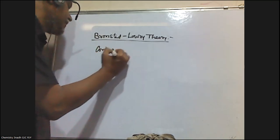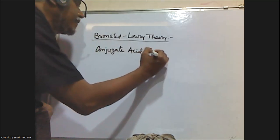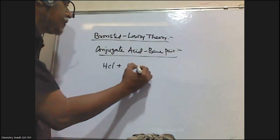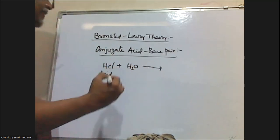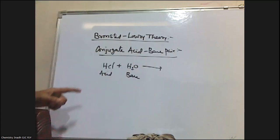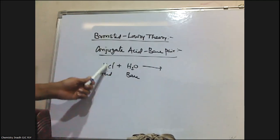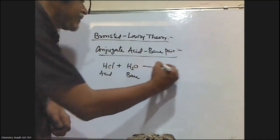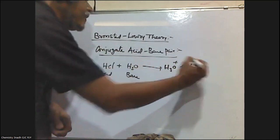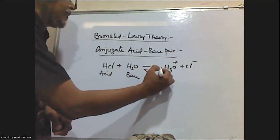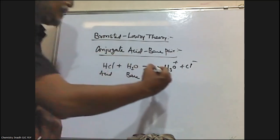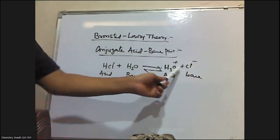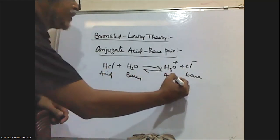Now let us discuss what is Conjugate Acid Base Theory. For example, if you take HCl and H2O — here HCl is acting as a Bronsted Acid and H2O is acting as a Bronsted Base. HCl is donating a proton to H2O, and H2O is accepting a proton from HCl, forming H3O⁺ and Cl⁻. In the reverse reaction, H3O⁺ is acting as an acid and Cl⁻ is accepting a proton from H3O⁺, acting as a base. This gives us Acid 1, Base 1, Acid 2, Base 2.